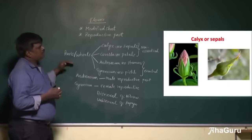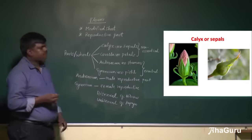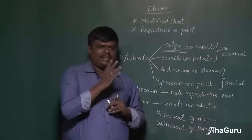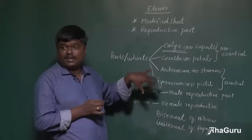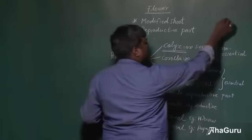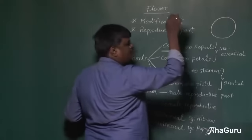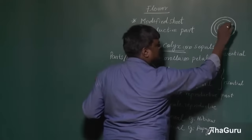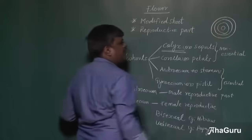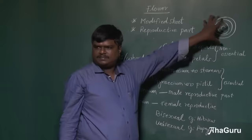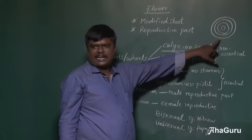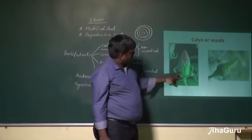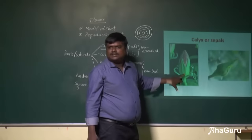Now we are going to talk about the first part — calyx. What is the function of calyx? The calyx is usually green in color and is the outermost whorl of the flower. The outer layer is calyx, next to that is corolla, then androecium, and at the center is the gynoecium. You can see the green colored part in the picture — that is the calyx.